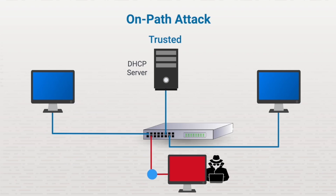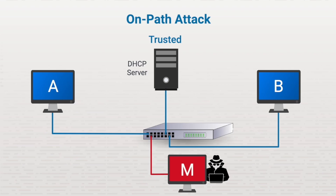So how does an attacker implement an on-path attack? In normal operations, ARP tables are used to identify end devices. Once identified, communications can flow between the devices. So an attacker assumes the identity of both endpoints and inserts themselves in the middle of the communication.